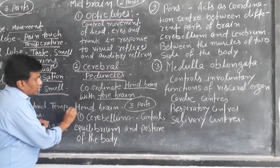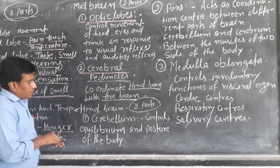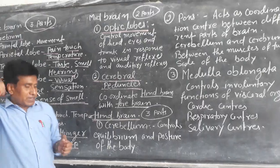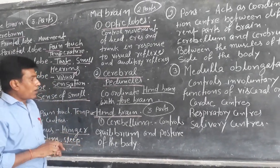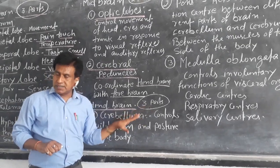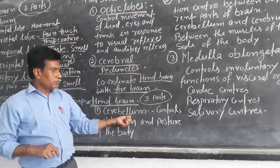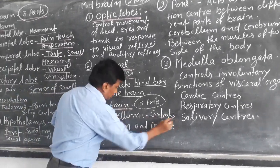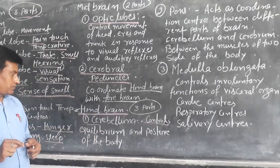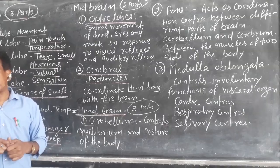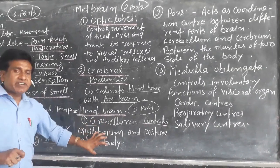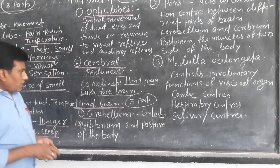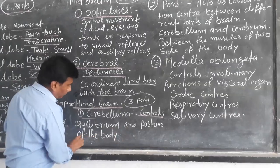The third part of our brain is the hindbrain. It is also formed of three parts. The first part is the cerebellum, and it controls the equilibrium and posture of the body.